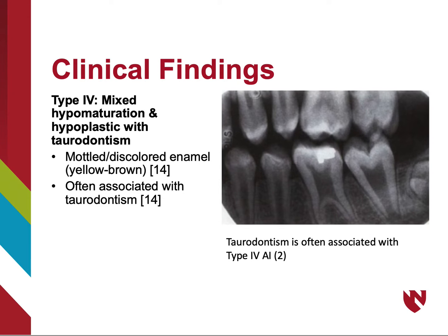In type 4 AI, patients typically present with mottled or discolored enamel, giving it a yellow-brown appearance. Radiographically, this type will also reveal taurodontism, as can be seen in the image.